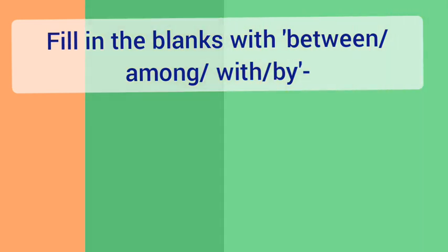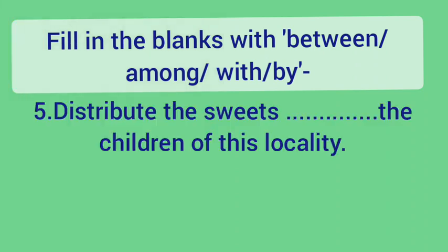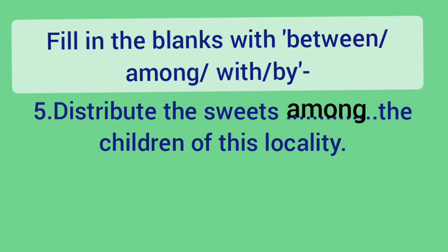Number 5: Distribute the sweets ___ the children of this locality. Think about what goes here — since children refers to more than two, the answer is 'among'. Distribute the sweets among the children of this locality, meaning distribute all the sweets among all the people living in this locality.